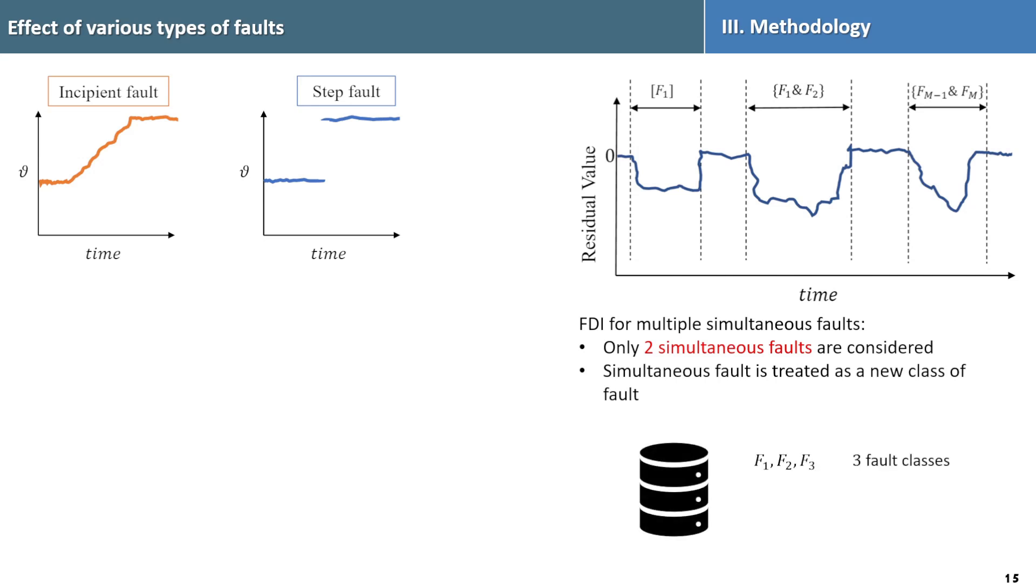To illustrate, if we initially have three fault classes, let's say F1, F2, and F3, introducing simultaneous fault creates three more classes: F1-F2, F2-F3, and F1-F3. This results in total of six fault classes for the AI model to be trained on.